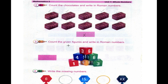Count the given figures and write in Roman numbers. Now we have to count these blocks and write them in Roman numbers: 1, 2, 3, 4, 5, 6. The total is 6. VI is 6.